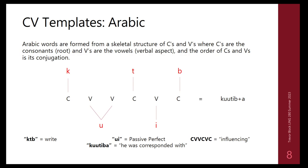Now we'll look at different levels of explanation: consonant-vowel templates, syllables, and so on. Arabic is an interesting language because it uses consonant and vowel templates to convey information about words. There are three different tiers: the CV tier, which is the skeleton of the word — just a sequence of consonants and vowels without specifying what they are yet.